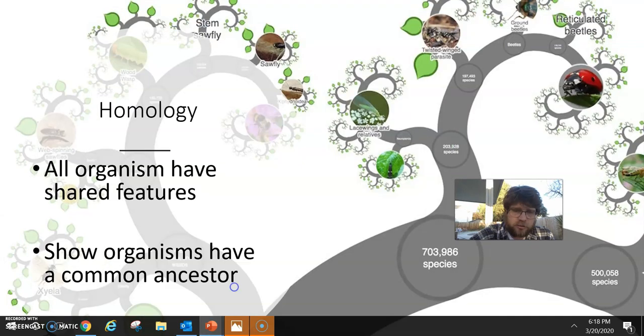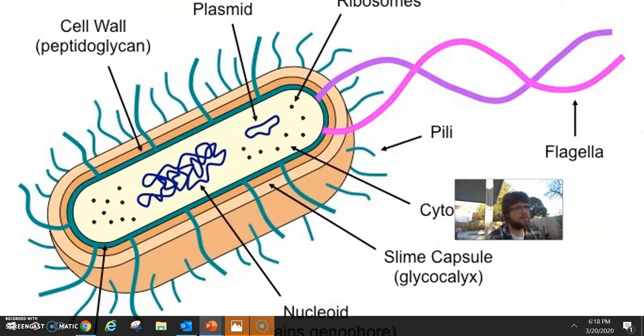Alright. Now, going back to our slideshow. Now, all 2 million plus species. What is some homology we have? Cells. We all have cells.